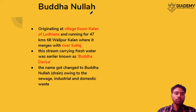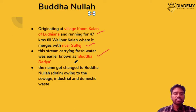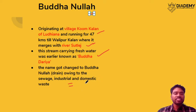The next topic is Buddha Nala. It starts from Kumb Kalan in Ludhiana, travels 47 kilometers, and joins the Sutlej river. It was originally a freshwater stream called Buddha Dharia, but owing to pollution caused by the release of sewage, industrial, and domestic waste, it is now called a Nala — essentially a drain.